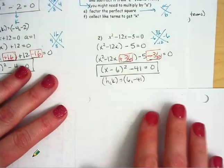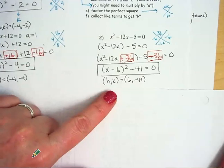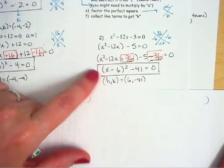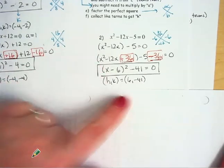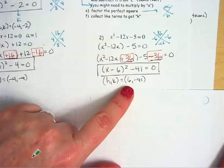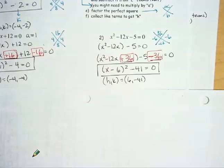Okay here's my work. So go ahead and pause the video and check. I have (x - 6)² - 41 = 0 and the vertex is (6, -41). Pause the video if you feel like you made a mistake and you just want to look at this and compare your work to mine.